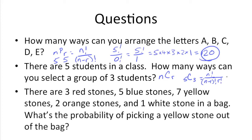This is 5 factorial over 5 minus 3 factorial, which is 2 factorial, times r factorial, which is 3 factorial.